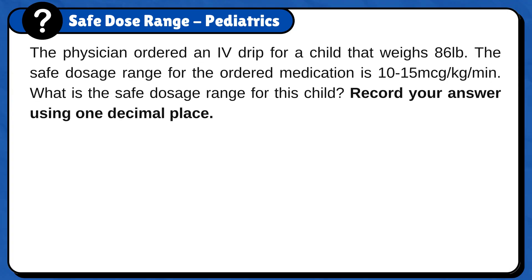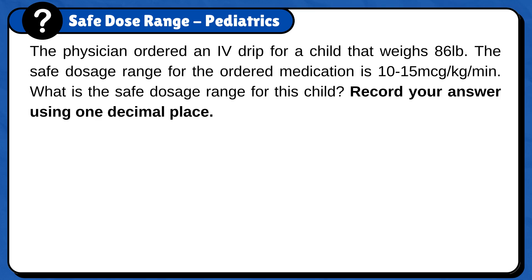The physician ordered an IV drip for a child that weighs 86 pounds. The safe dosage range for the ordered medication is 10 to 15 micrograms per kilogram per minute. What is the safe dosage range for this child? Record your answer using one decimal place.